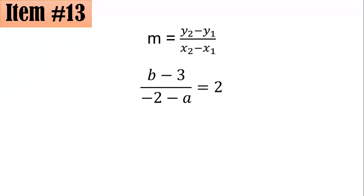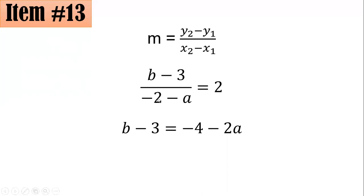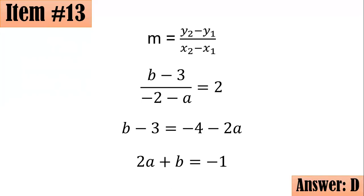All you have to do is find the slope of (A, 3) and (negative 2, B) and equate it with the given slope of 2. So we have (B minus 3) over (negative 2 minus A) equals 2. Multiplying both sides by (negative 2 minus A) gives B minus 3 equals negative 4 minus 2A. Adding 2A to both sides and adding 3 to both sides simplifies to 2A plus B equals negative 1, letter D.